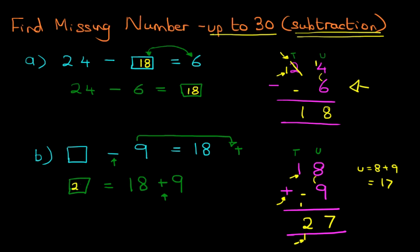Let's write this down. We've got 27. So 27 equals 18 plus 9. Write this in the original question. We've got 27 minus 9 equals 18. So we have found the missing number. It is 27. So that is another method of how to find the missing number for numbers up to 30 for subtraction questions.